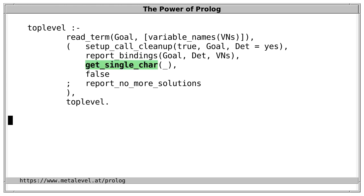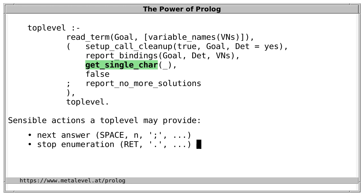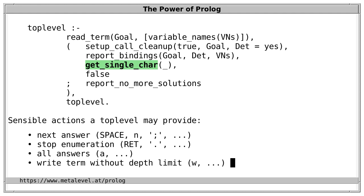Regarding get_single_char, a top level can use this to provide sensible actions. Instead of waiting for any keypress, a top level could introduce dedicated keys: space, n, or semicolon to show the next answer; return or dot to stop enumeration; 'a' to show all answers (useful because unintended answers often show up after a few intended solutions); or 'w' to write all terms unabbreviated. Scryer Prolog provides all of these. At the same time there is clearly a trade-off, because the top level should be easy to understand and use — in case of doubt, better keep it simple.